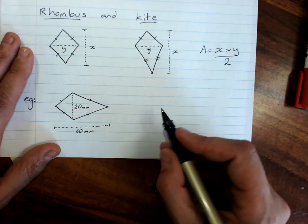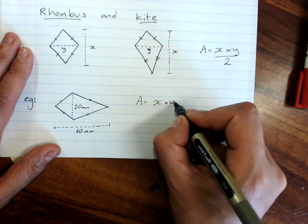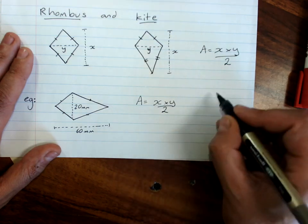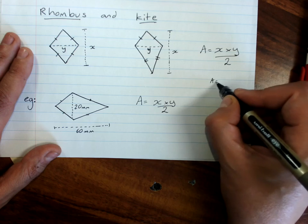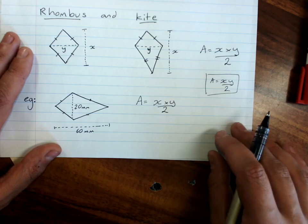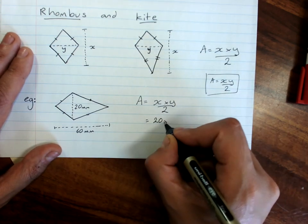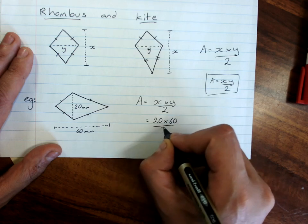So here we've got a kite. We write the formula: area is x times y divided by 2. Or we could write that as a fraction, x times y over 2, which is better because then we don't get mixed up with that times sign. Substitute in your values: 20 times 60 divided by 2.